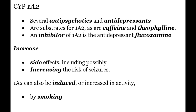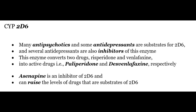Now let's discuss some common CYP enzymes. The first is CYP1A2, whose substrates range from antipsychotics and antidepressants to caffeine and theophylline. The antidepressant fluvoxamine is its well-known inhibitor and can increase side effects, including possibly increasing the risk of seizures. This enzyme system is also induced by smoking. Coming on to CYP2D6: its substrates include many antipsychotics and antidepressants, and several antidepressants are also inhibitors of this enzyme. This enzyme converts two drugs — risperidone and venlafaxine — into active drugs, paliperidone and desvenlafaxine respectively. Asenapine is its inhibitor and can raise the levels of drugs that are its substrates.